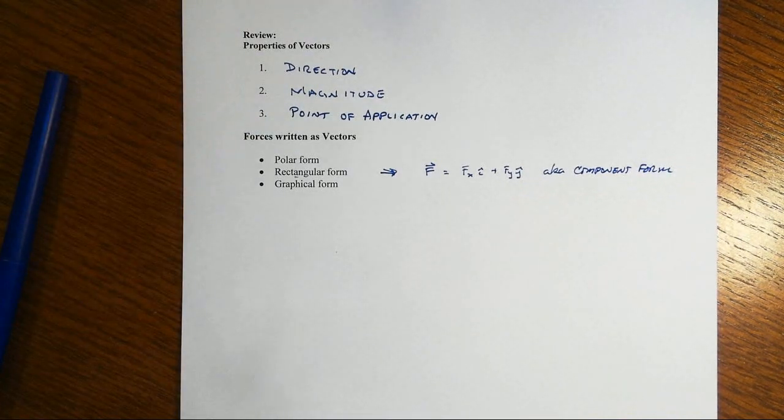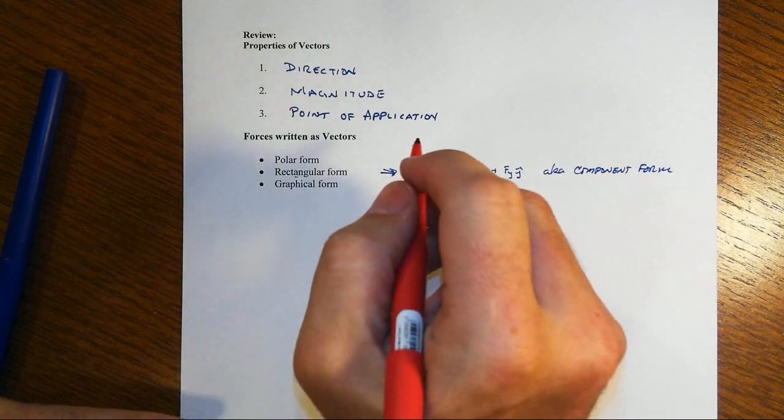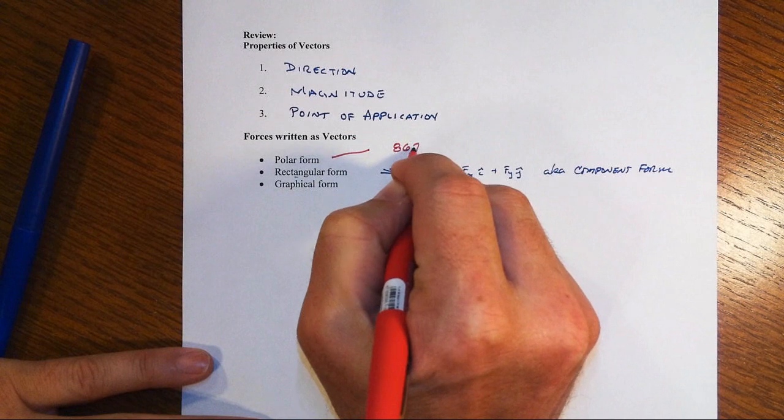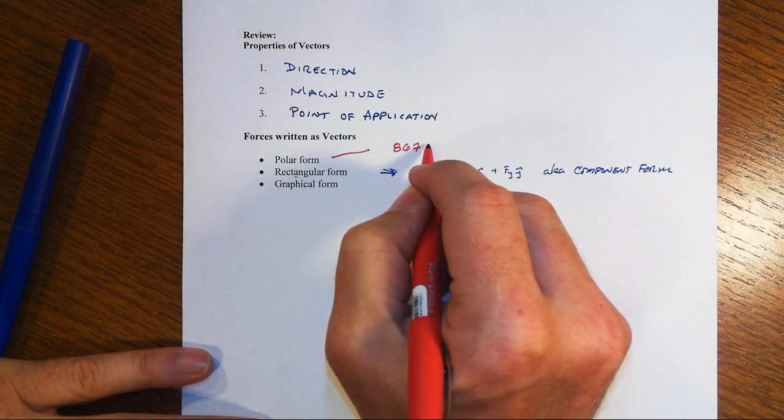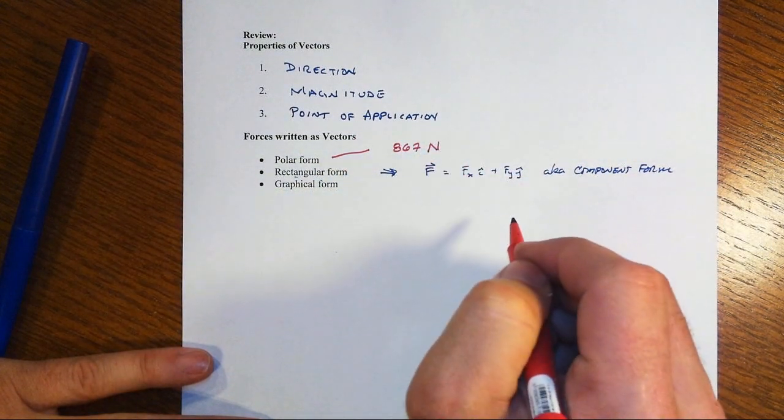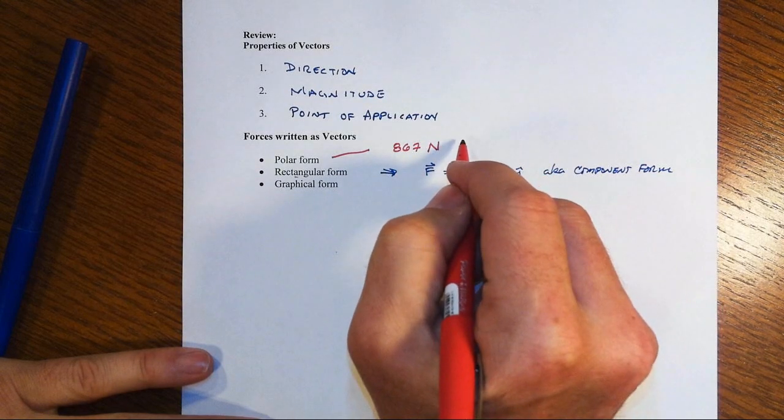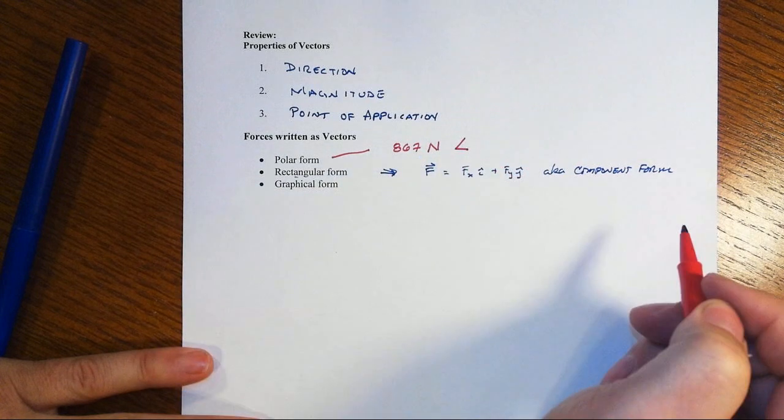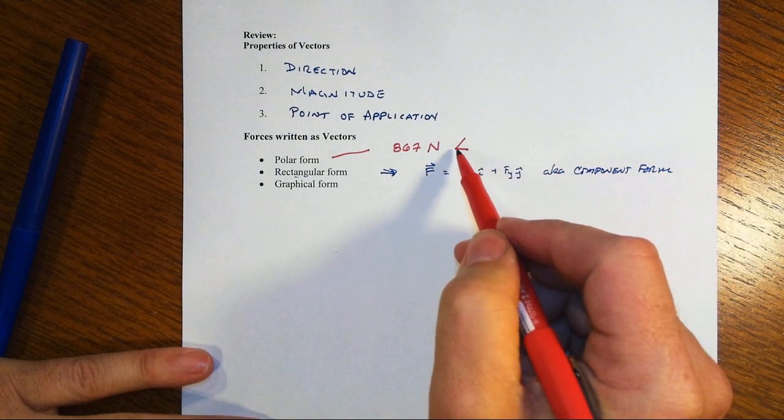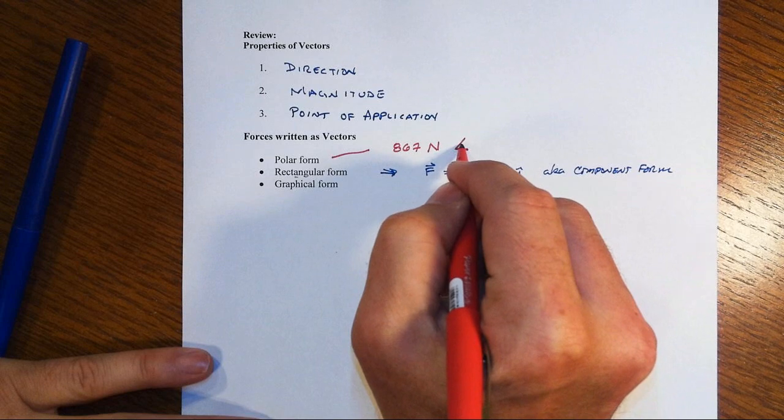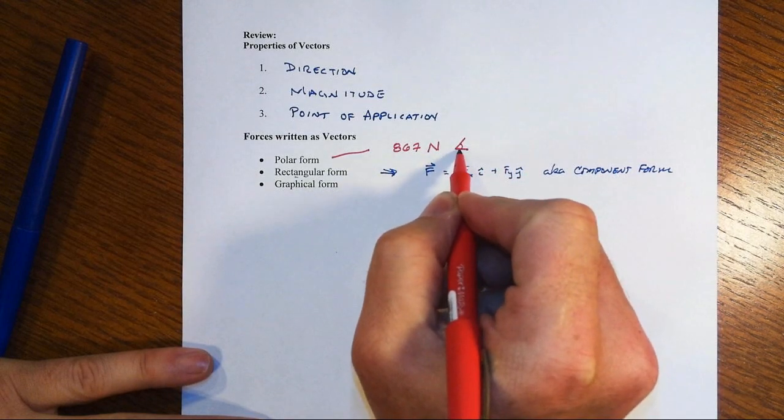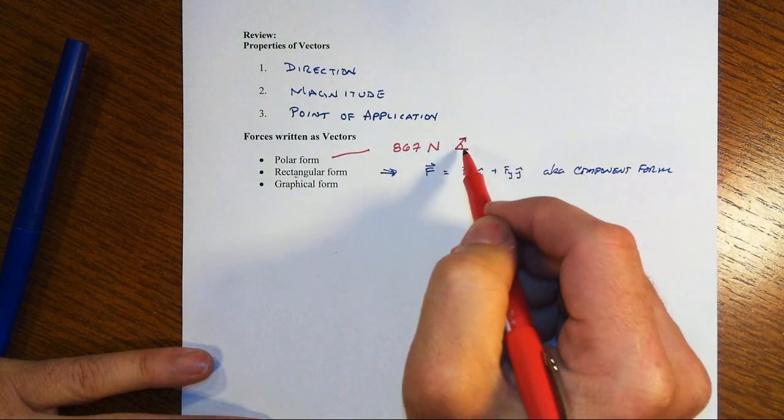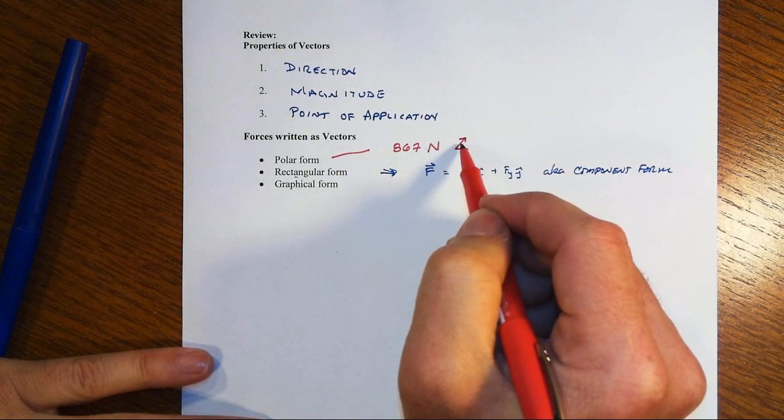The polar form is something of the notion of we'll have the magnitude of the vector maybe 867 units and that would be say newtons for force in our case. So that would be the magnitude and then the direction would be indicated with some sort of little less than greater than type of symbol. Well, the way that really usually works is that the horizontal line is your reference point. And then if you put your little arrow there that says I am using that horizontal line as the reference point, there's the actual arrow.